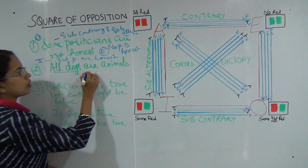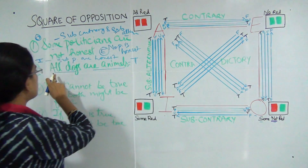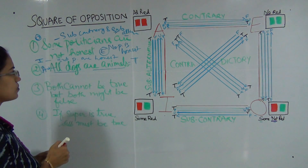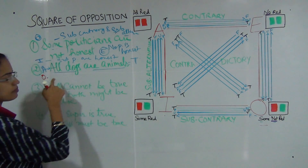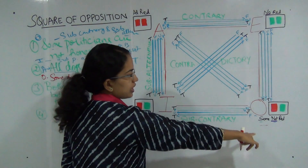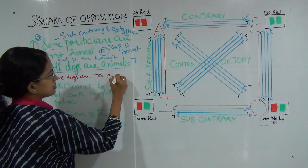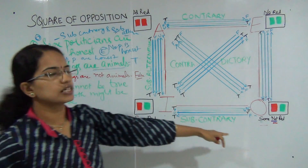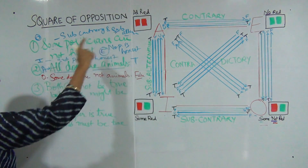The next question is: 'All dogs are animals' is a true statement — find the contradictory. 'All dogs are animals' is an A-type statement. The contradictory is O-type, where universal becomes particular, so it would be 'some dogs are not animals.' This would be a false statement, because since I am claiming all dogs are animals, I cannot say some dogs are not animals. So that is the contradictory proposition.